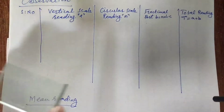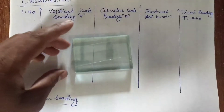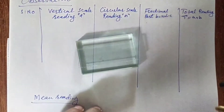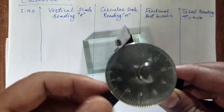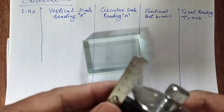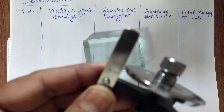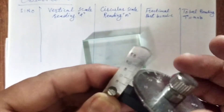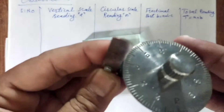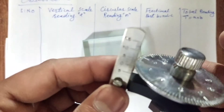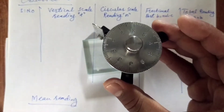To perform the experiment to find the thickness of glass strip, first of all we will check its zero error, means we will coincide the zeros of the main scale and circular scale. If the zero of the main scale coincides with the zero of the circular scale, then there will be no zero error.